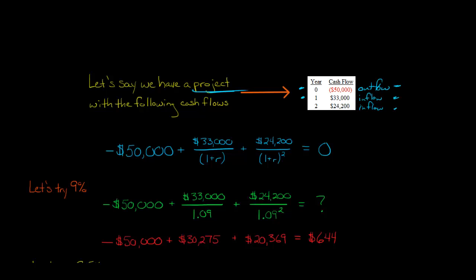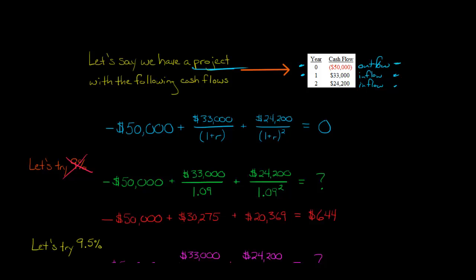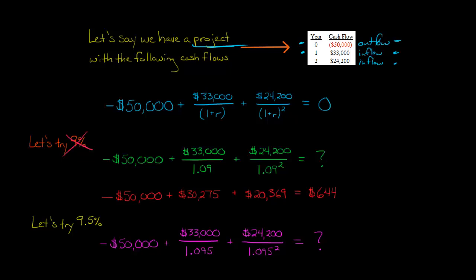Now, remember, we said the IRR is supposed to give us an NPV of zero when we plug in for R. But we don't have an NPV of zero. We have $644. So obviously, 9% is not correct. So that's not our IRR. So let's try another one. Let's try 9.5%. And we'll just iteratively go and try different values.